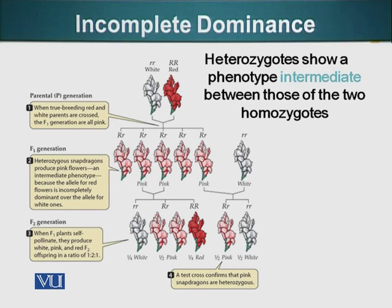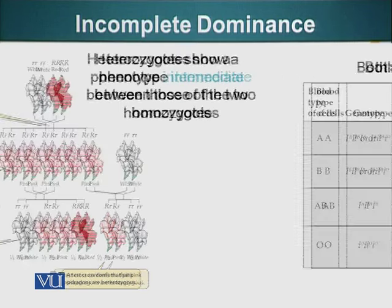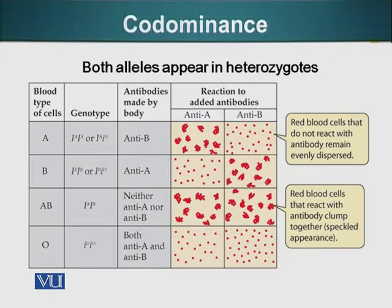Now let's look at another mode in which genetic information is passed from one generation to the next. I would like to give you an example of co-dominance, in which both genes are dominant and fully expressed. The classic example of co-dominance is blood groups.